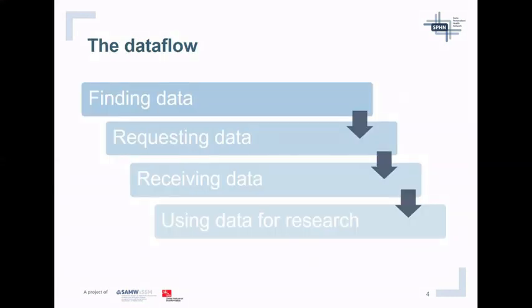From a researcher's perspective who has a research idea, the data flow is fairly simple: researchers want to identify and find the data they can use, then request it, and ideally receive and use it for their research projects. But in the real world this is not as straightforward as we would wish. The Personalized Health Informatics Group, together with all collaborators and partners in the SPHN network, is working hard to streamline this process.